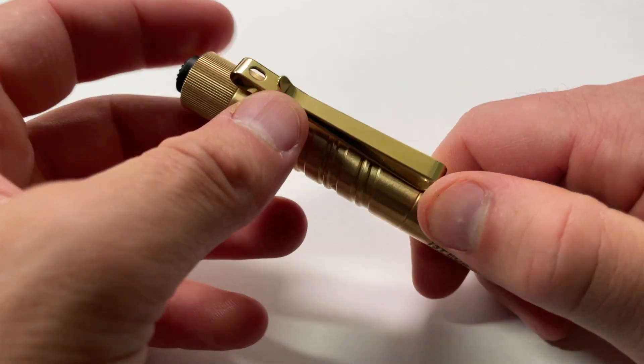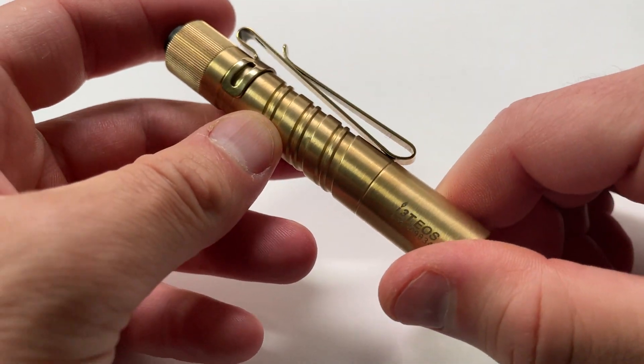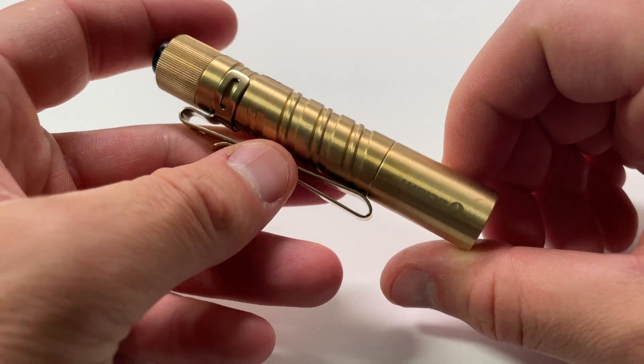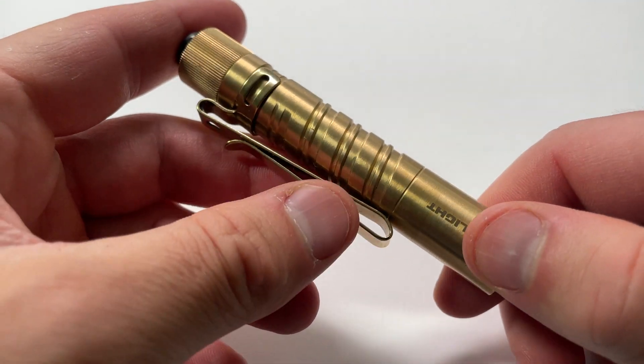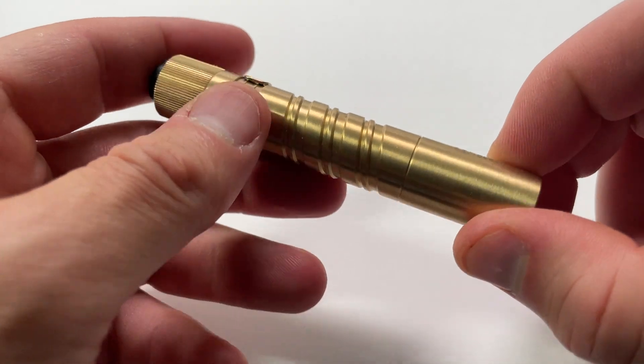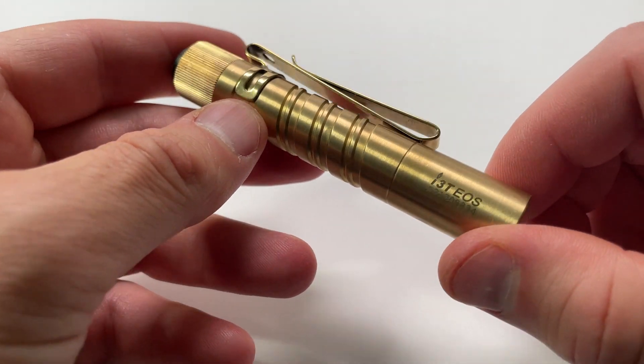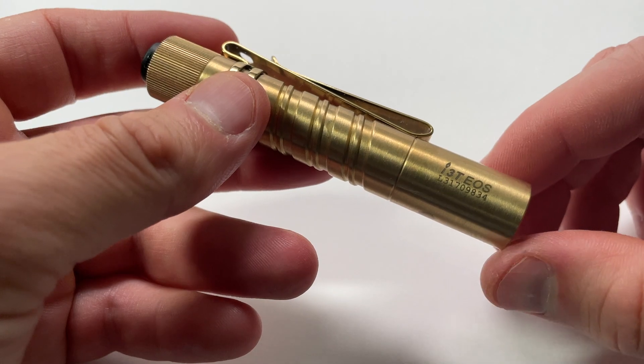It's a good size pocket flashlight for emergencies, for keeping in your car, for keeping on you if you need to kind of get around a crawl space or go around the attic. It's a little bit small for long extended activities, like walking your dog at night or something like that.